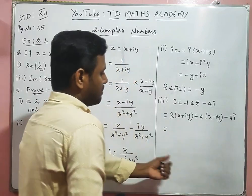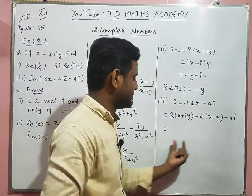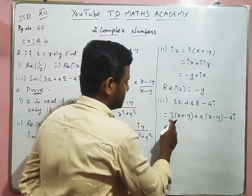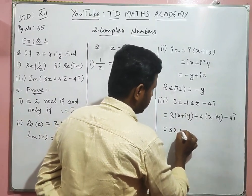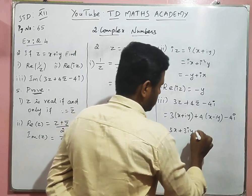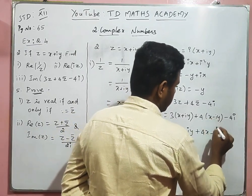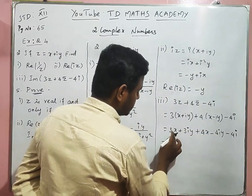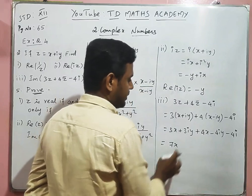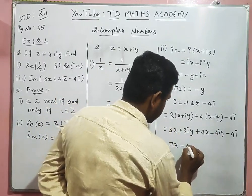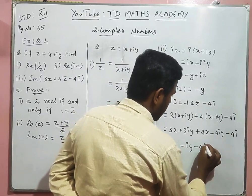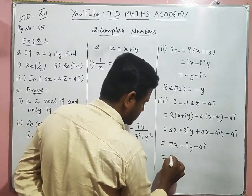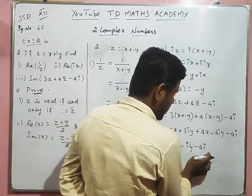Expanding using algebraic rules: 3x + 3iy + 4x - 4iy - 4i. Combining like terms: real parts give 3x + 4x = 7x; imaginary parts give 3iy - 4iy = -iy; so we have 7x - iy - 4i.